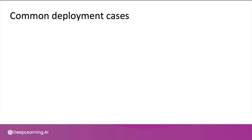In the last video, I alluded to some of the differences between a first deployment versus a maintenance or an update deployment. Let's flesh this out in a little more detail. One type of deployment is if you are offering a new product or capability that you had not previously offered — for example, if you're offering a speech recognition service that you had not offered before.